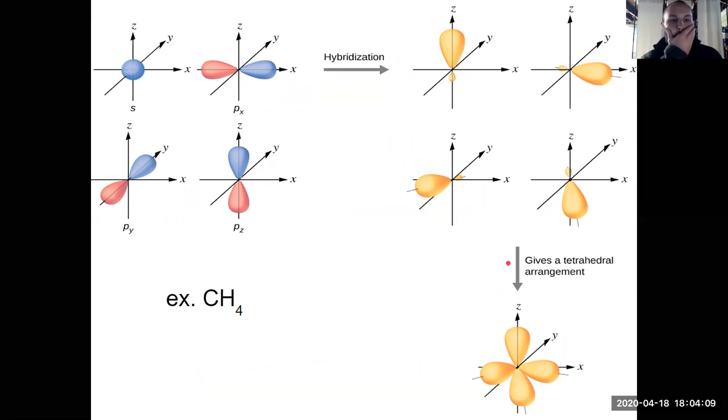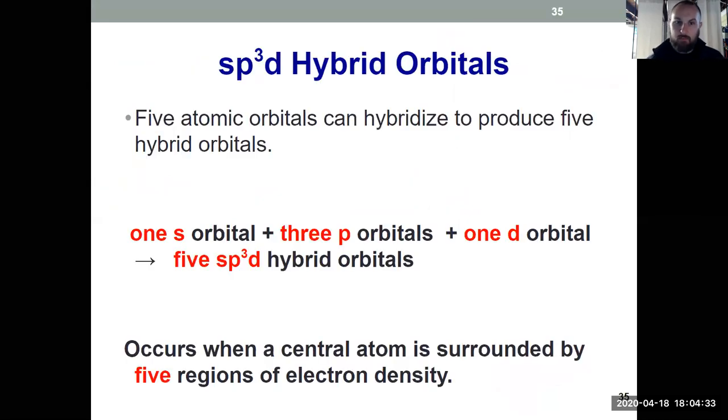Now what about when something's surrounded by five regions of electron density? I used my s orbital, and now I've used all three of my p orbitals here. There's never a fourth p orbital because that would mean the p subshell could hold up to eight electrons. There's only three p orbitals, px, py, and pz. So now we've used them up. So if I want to surround something by five regions of electron density, I have to pull in a d orbital, and this only happens with things that are hypervalent, because when I'm surrounded by five regions of electron density, I've exceeded the octet rule that we introduced in Chapter 7.